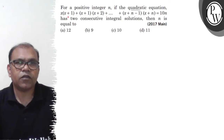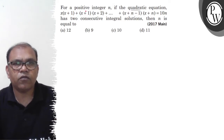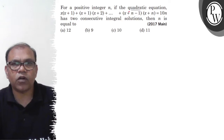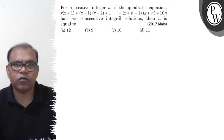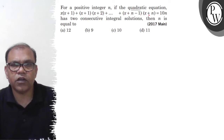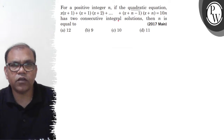Let's see the question. The question says, for a positive integer n, if the quadratic equation x(x+1) + (x+1)(x+2) + ... + (x+n-1)(x+n) equals 10n has two consecutive integral solutions, then n is equal to?